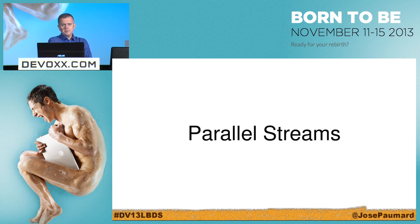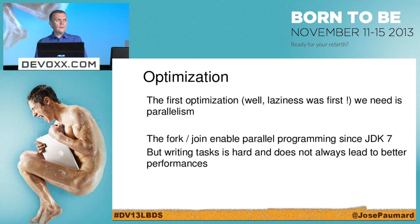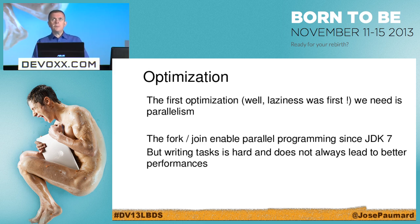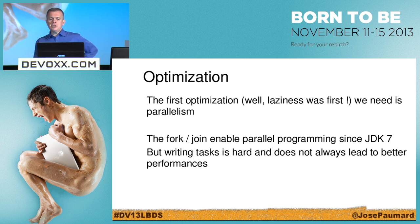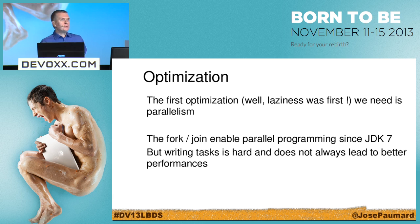Parallel streams — let's go parallel at last. After laziness, parallelism may be the second important optimization, because we live in a multi-core world and exploiting multiple cores can improve performance. In Java 7, there's the fork-join framework, which might be a little tricky to use. Writing tasks, tuning the algorithm, and choosing the right splitting strategy is not always simple.